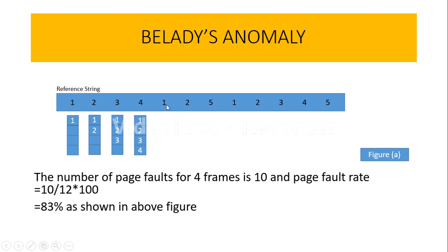With 4 frames, whenever there is a page fault for the first 4 frames, we are going to load them. Till here there will be no problem. When there is a request for page 1 or page 2, they are already on the frame, so there is no page replacement needed. When we go for page 5, since there is no 5th page on the frame, we need a page replacement. We remove the oldest page — page 1 was the oldest among all 4 pages, so we replace page 1 with 5.